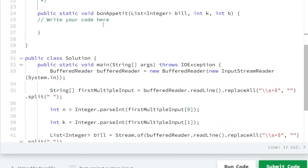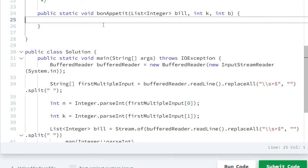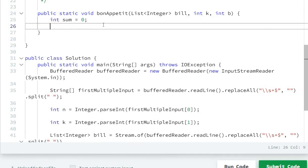First of all, I will create a variable called sum, int sum equals to zero. Then I'll create a for loop: for int i equal to 0, i is less than bill.size, then I will do i plus plus.